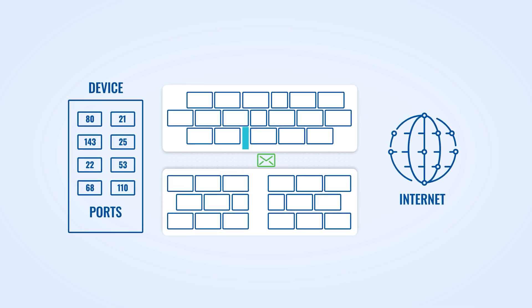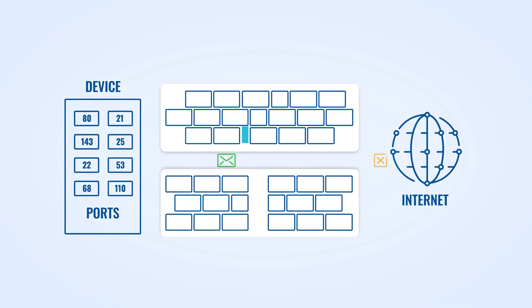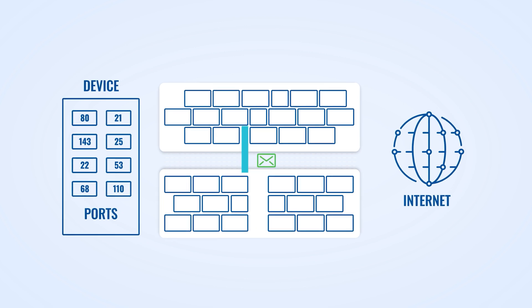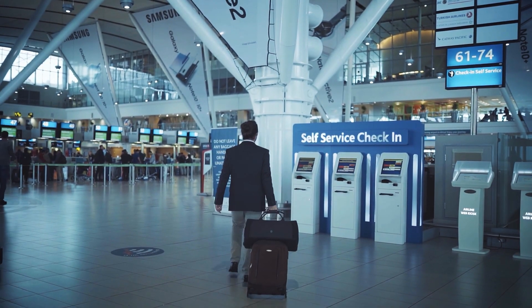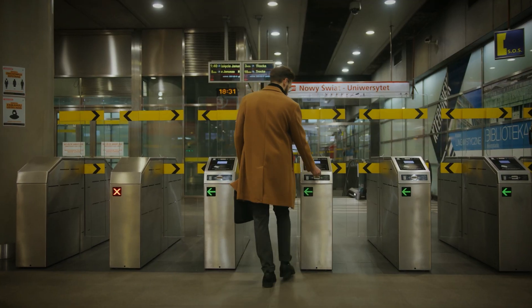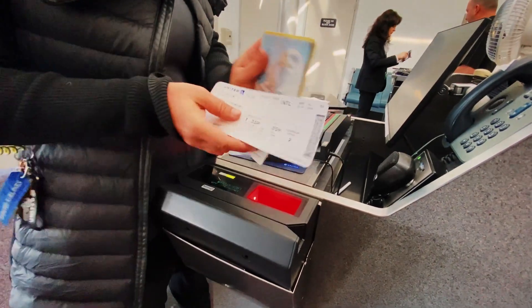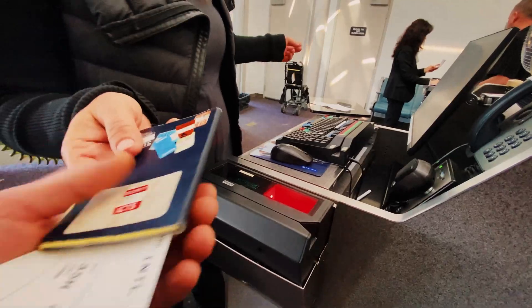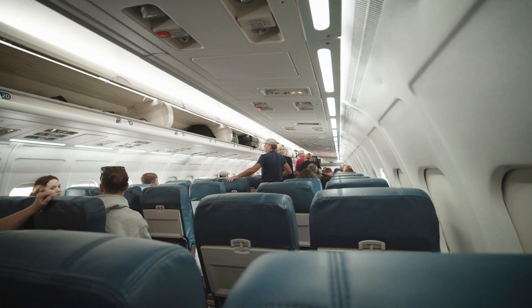A firewall is like a set of rules that either permits or denies access to data or devices from different networks. Think of firewalls as airport checkpoints. Before you're allowed to take off, you must go through several checkpoints to ensure you have all the necessary documents and are not carrying anything you're not allowed to.